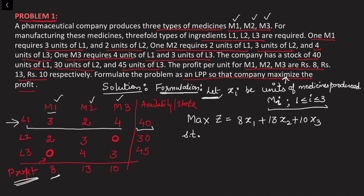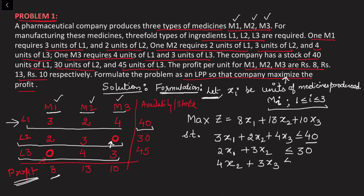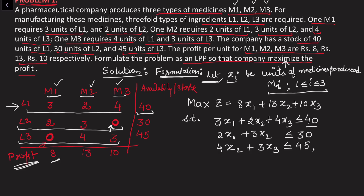For ingredient L1, the availability is 40 units and it is required for all three medicines: 3x1 + 2x2 + 4x3 ≤ 40. For ingredient L2, it is required for M1 and M2 only: 2x1 + 3x2 ≤ 30. For ingredient L3, it is required for M2 and M3 only: 4x2 + 3x3 ≤ 45. There is no explicit minimum production restriction given, so the non-negative restriction applies: x1, x2, x3 ≥ 0. This completes the formulation of the second problem.